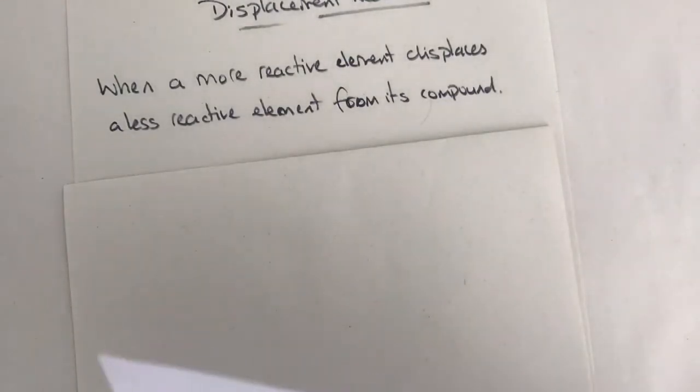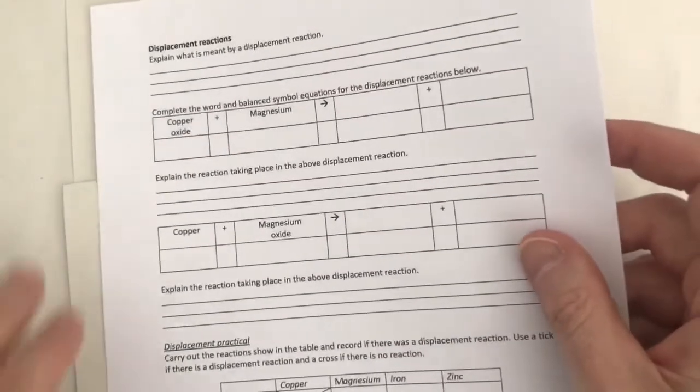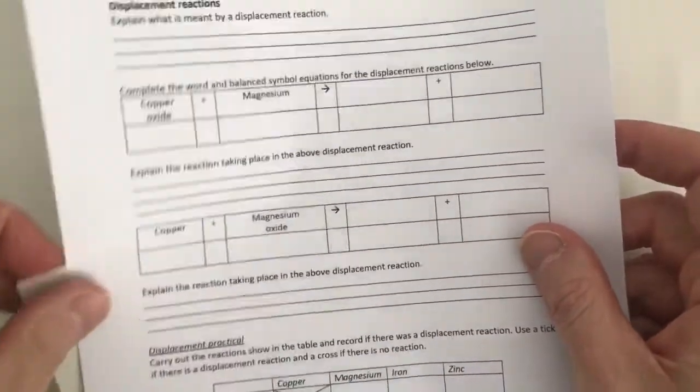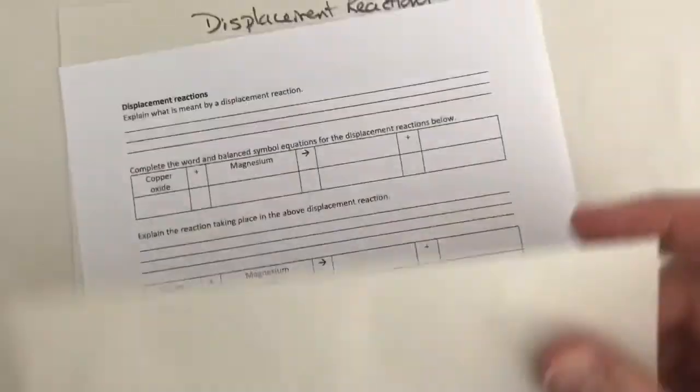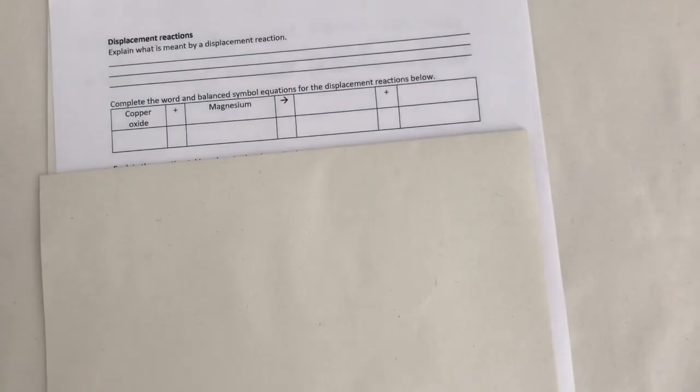Probably the best way to illustrate this is to use an example. So let me just put this in front of you. This is taken from your books. If you find this in your books, you can complete this in there as well. And you can see at the top it says what is meant by a displacement reaction. We've just defined that. And then here's our example.